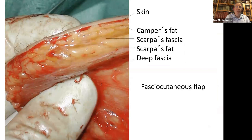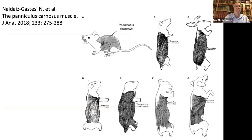Here is a fasciocutaneous flap where you can see the skin, the Camper's fascia, Scarpa's fascia, the Scarpa's fat layer, and the deep fascia, which is very well vascularized for fasciocutaneous flaps.